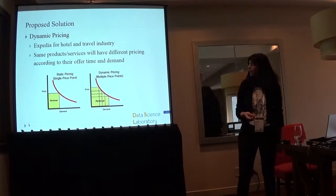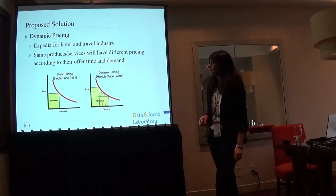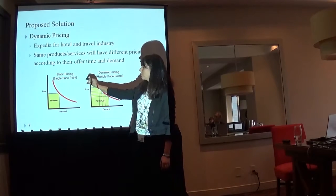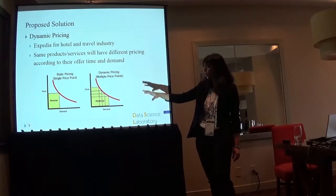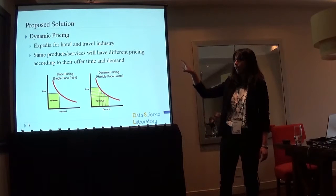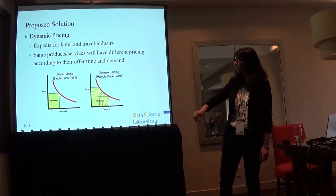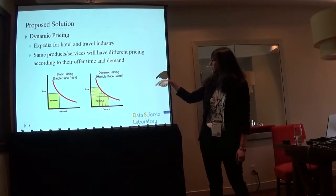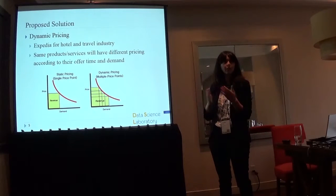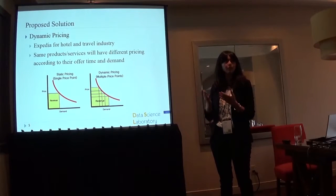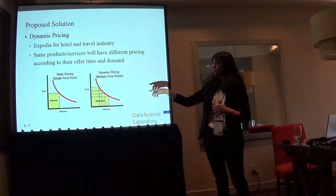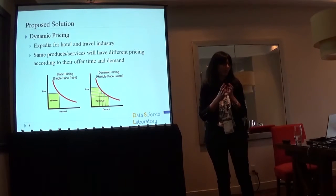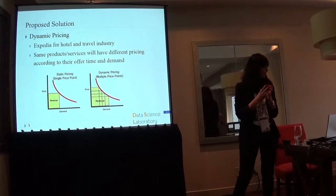When you have static pricing, you have only one single price point for all demand coming to the market, so you make only that fixed portion of revenue — represented by the yellow part. Whereas with dynamic pricing, as the demand changes the price changes, and the revenue you make is the cumulative sum of all the revenue you can capture while adjusting your price.